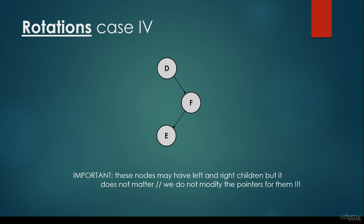What about case 4? It is quite symmetric — instead of the left-right heavy situation, it is the right-left heavy situation. As with the left-right case, these nodes may have left and right children, but it doesn't matter because we don't modify the pointers for them. For example, if node F has a right child, no matter what happens to node F, its right child remains the same — we are not going to modify this reference.